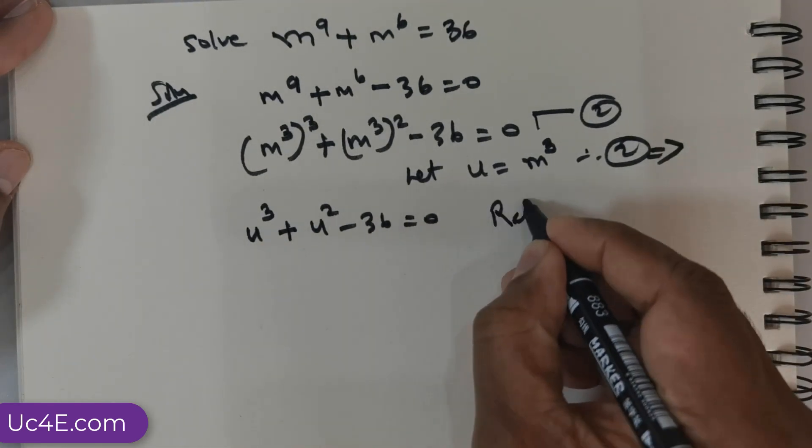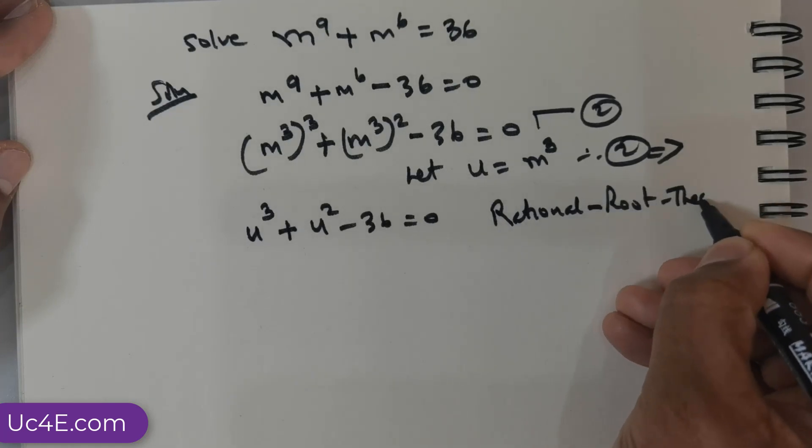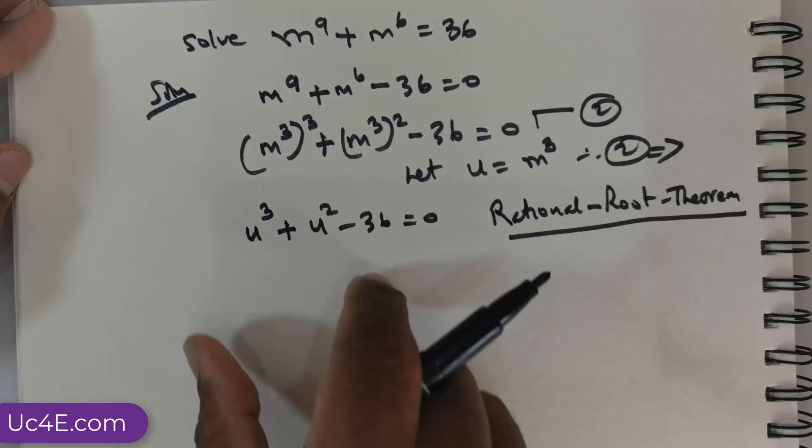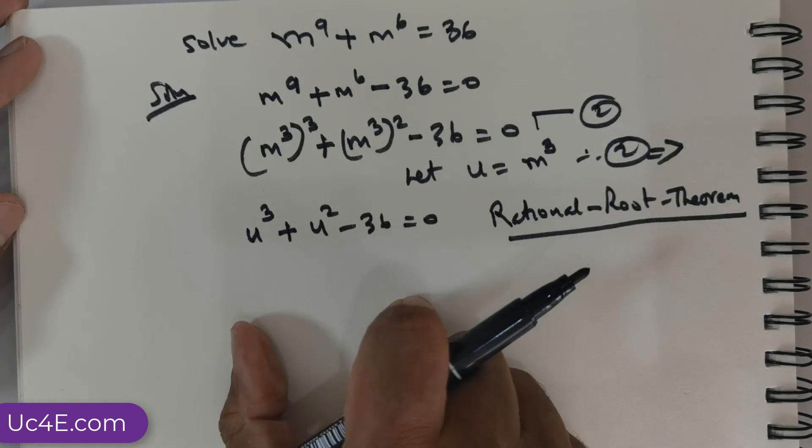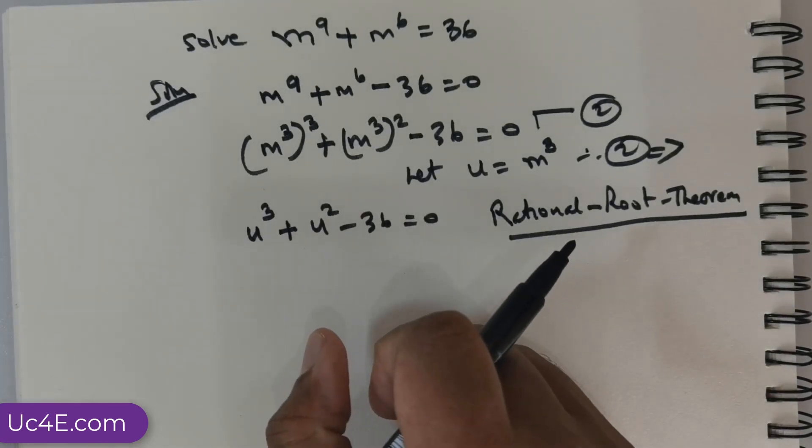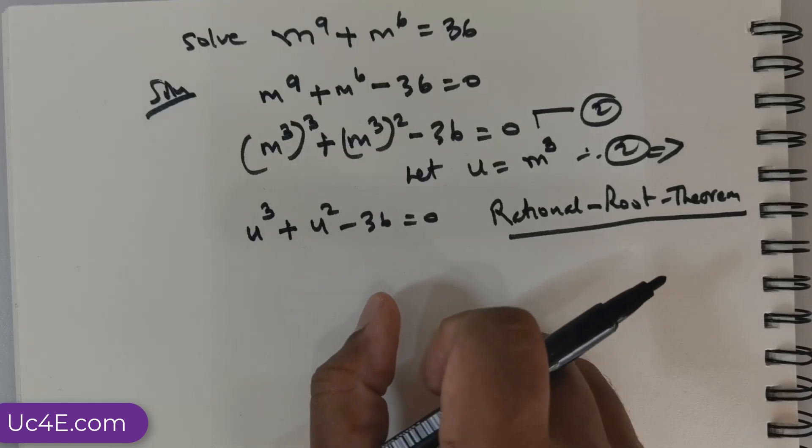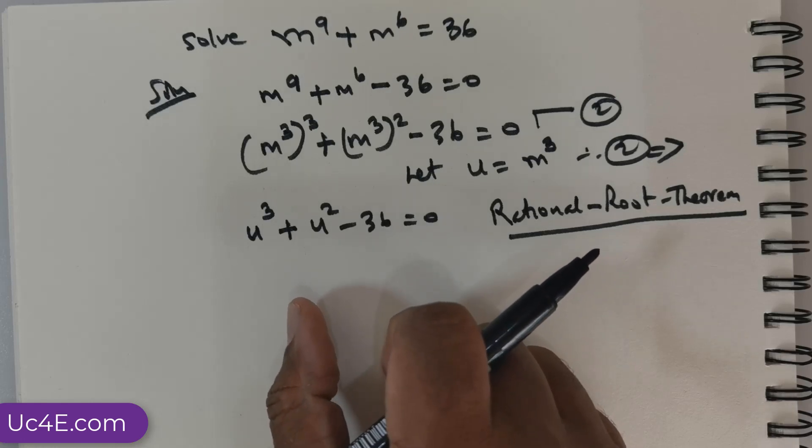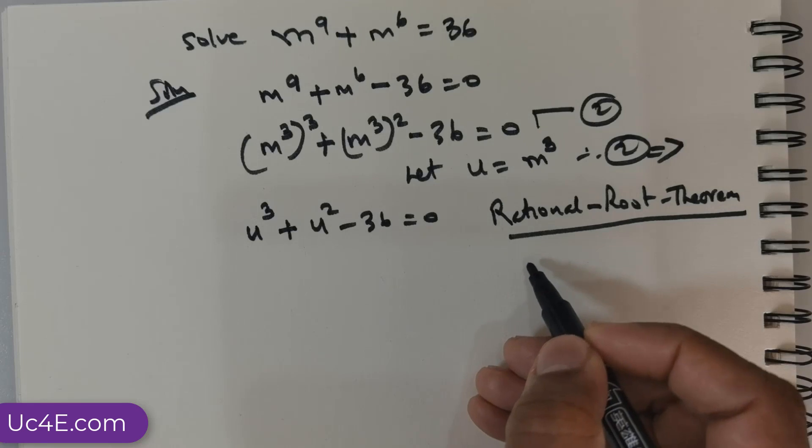Now, how do we solve equations or polynomials of this nature? Very simple. We would be using what is called the Rational Root Theorem. Now, Rational Root Theorem, I also have a video which I would place in this particular link or in this video description. You can actually go and watch that. That is done using Rational Root Theorem. And that is a complicated question. In this case, it is simple.